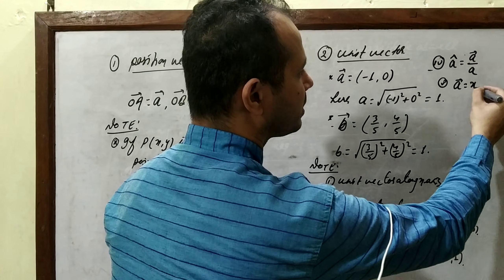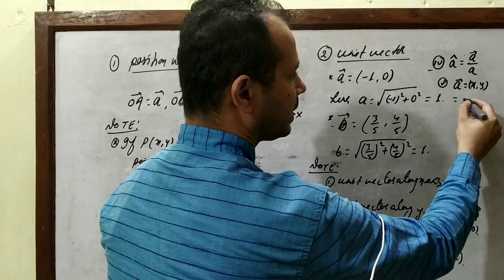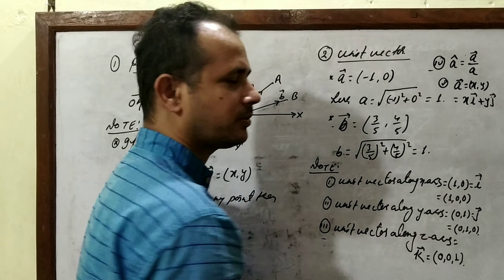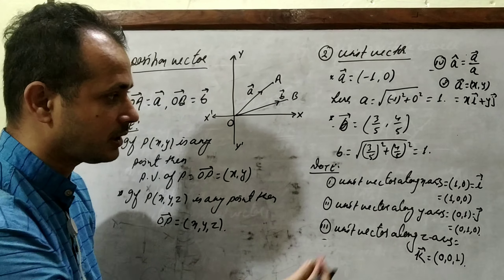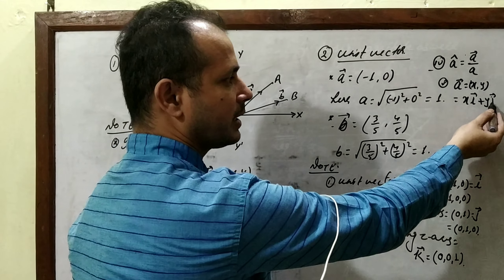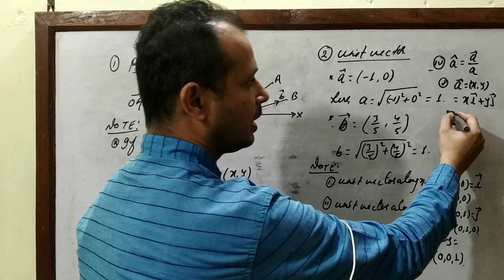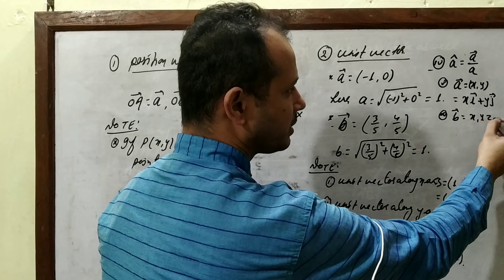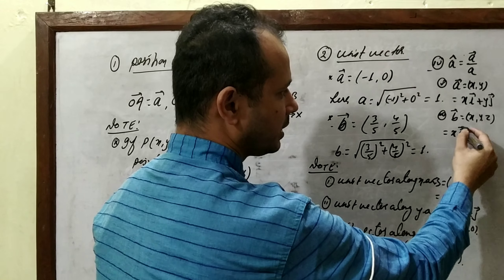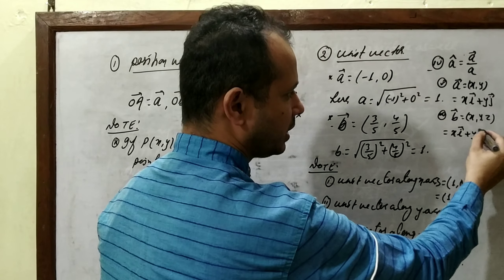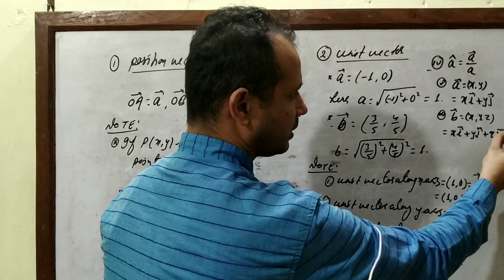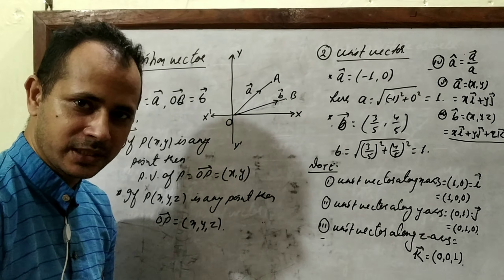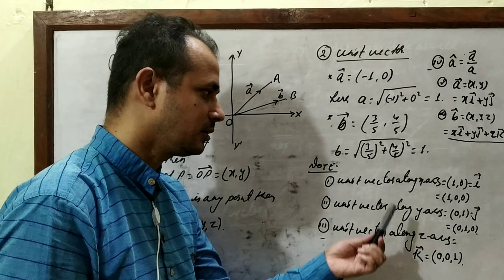If a vector a = (x, y), dividing by root(x² + y²) gives components x/√(x²+y²) and y/√(x²+y²), whose magnitude equals 1. So whenever we need a unit vector along a given vector, we simply divide the given vector by its magnitude. Also, vector (x, y) can be written as xi + yj in terms of i and j vectors. Similarly, b = (x, y, z) can be written as xi + yj + zk — this is the representation of a vector in terms of unit vectors along axes.